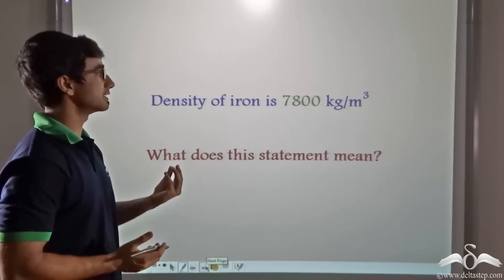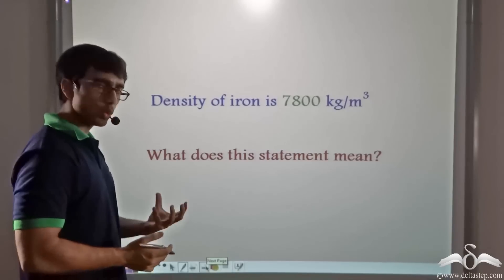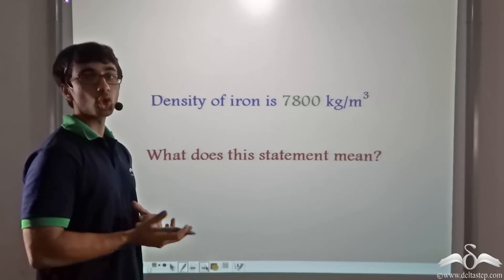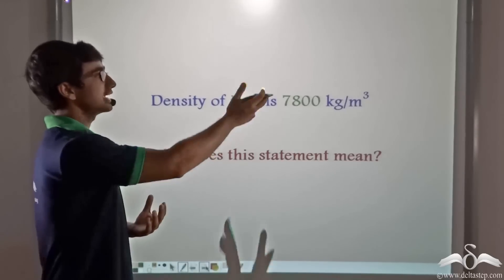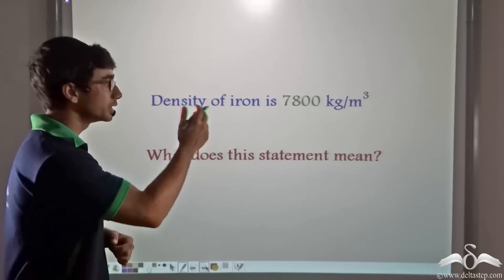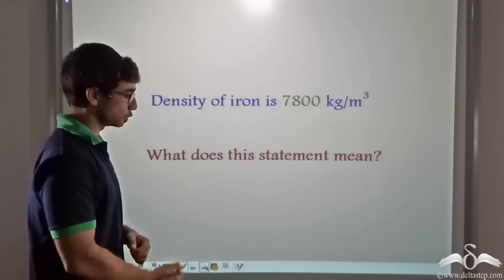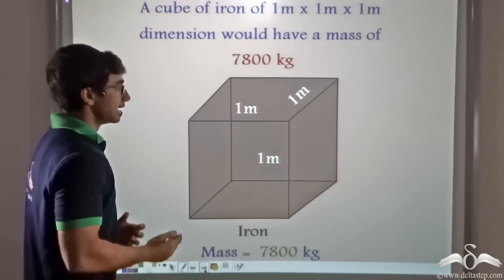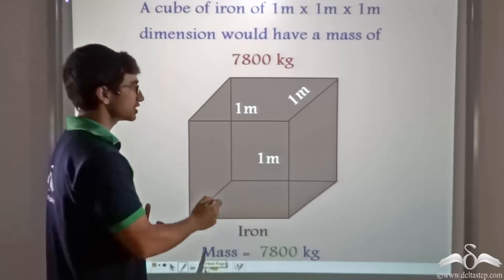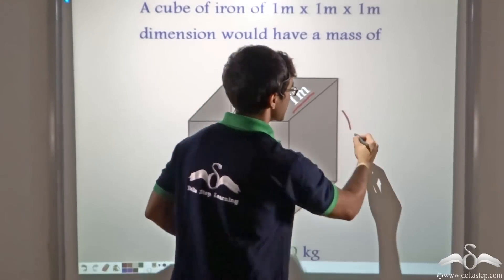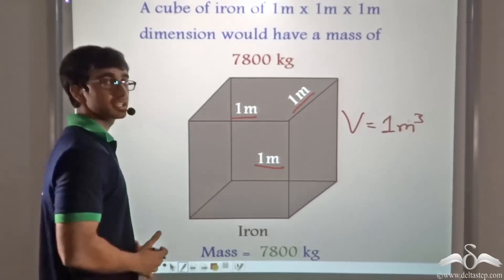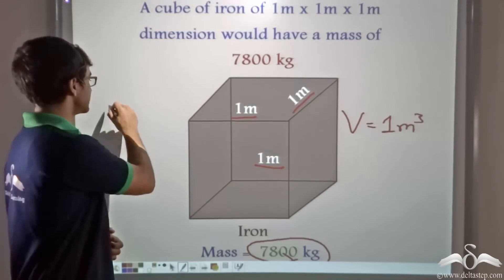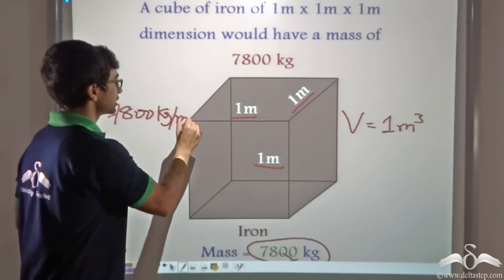Now when I say that the density of iron is 7800 kg per meter cube, what do you think this statement means? At first it might seem quite abstract that I am defining neither the volume nor the mass, but I am simply saying the density of iron is 7800 kg per meter cube. You will be surprised to know that in doing so I am defining both the mass as well as the volume. When I say that iron has a density of 7800 kg per meter cube, it means that a cube of iron with dimensions 1 meter by 1 meter by 1 meter — that is with a volume of 1 meter cube — would weigh 7800 kgs.